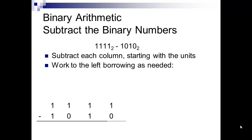Let's look at a binary number. The first ones I give you, I'm not going to borrow — I'll just show you subtracting. The next one I'll do the borrowing. So let's look at binary 1110 minus 1010. If you take 1 minus 0, you're left with a 1. 1 minus 1 is 0. 0 minus 0 is 0. 1 minus 1 is 0. It's pretty straightforward, just like regular arithmetic.